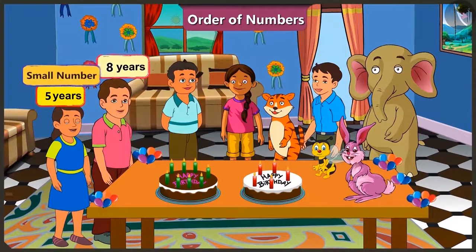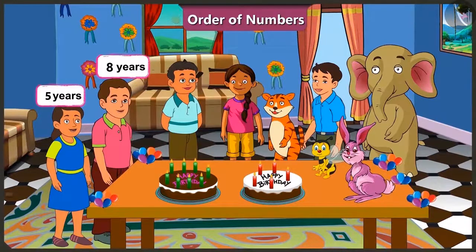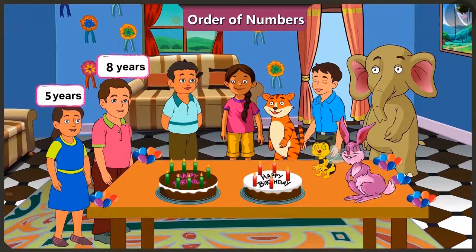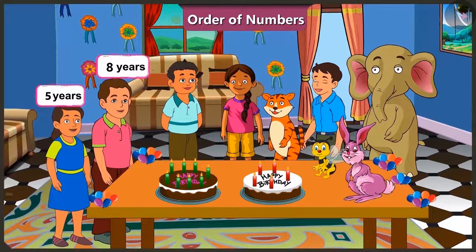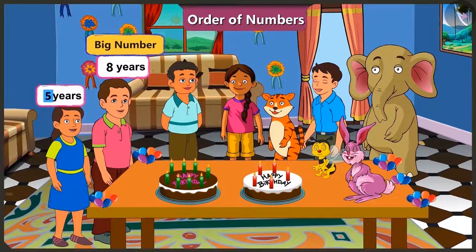Number 5 is smaller than number 8. While counting, we always count from smaller number to bigger number. Counting on this basis, can you tell me which number comes first — 5 or 8? 5 comes first in counting. Absolutely correct. While counting, 5 comes first, then 6, 7, 8. This shows that 8 is a bigger number because it comes after 5.